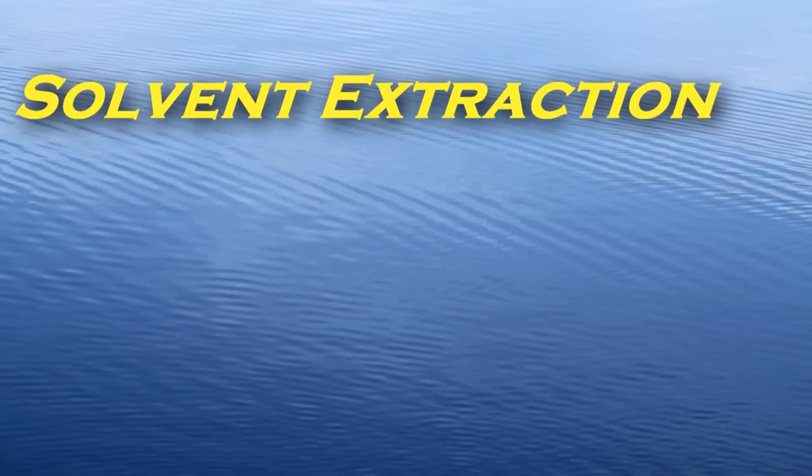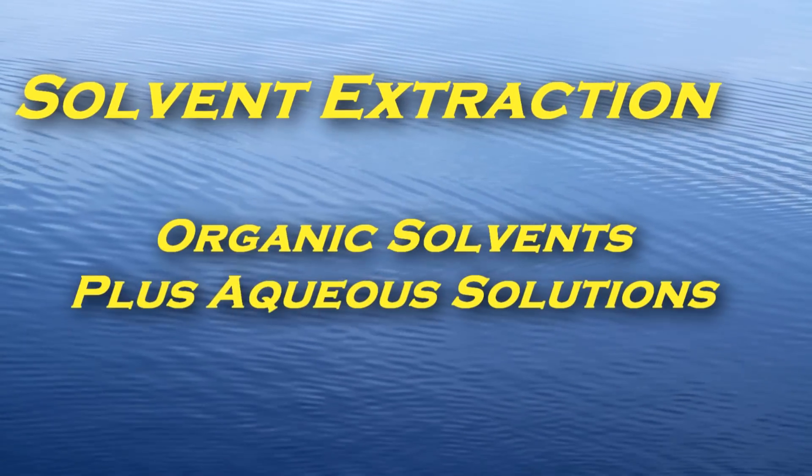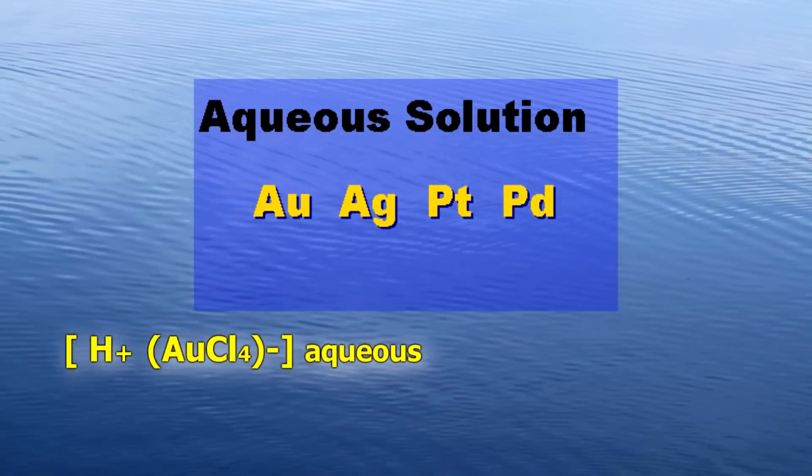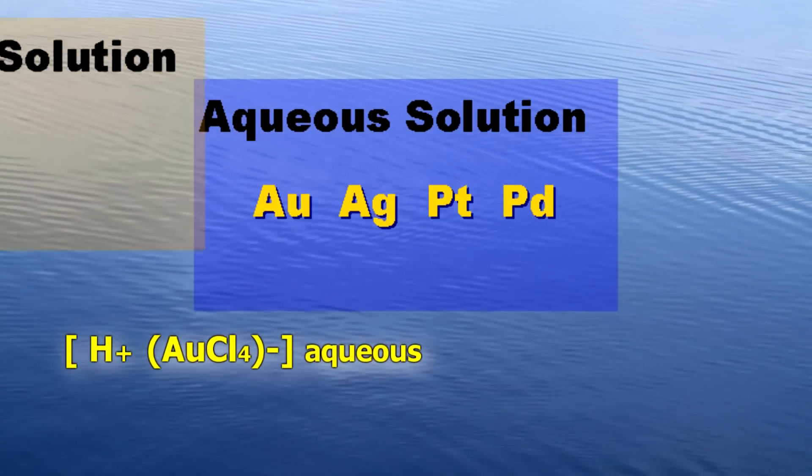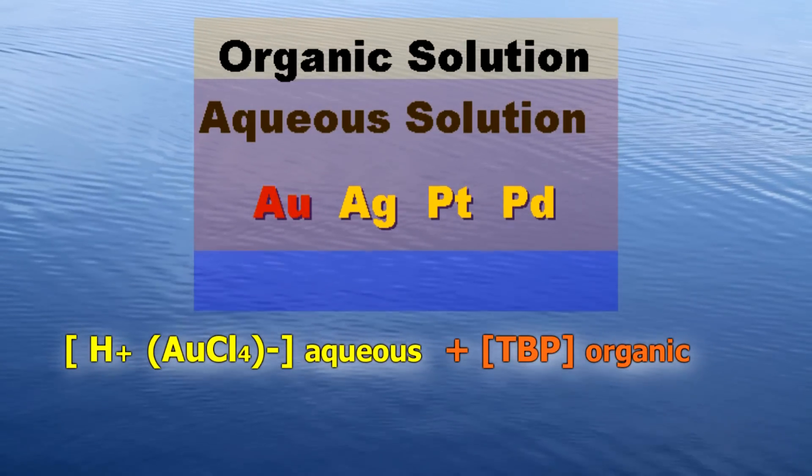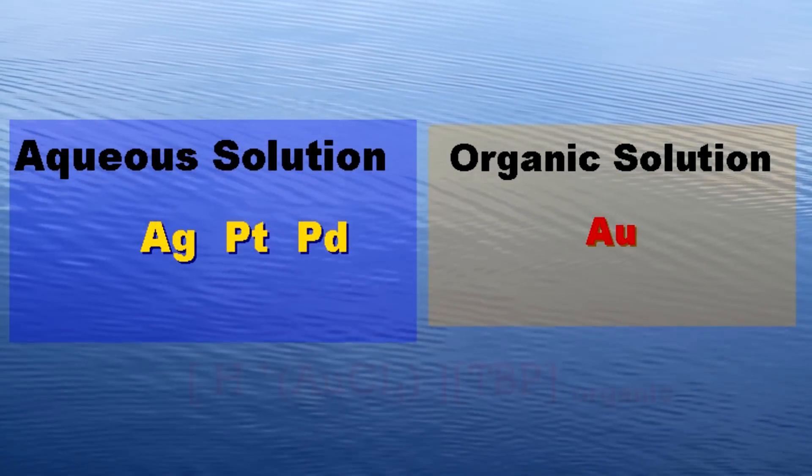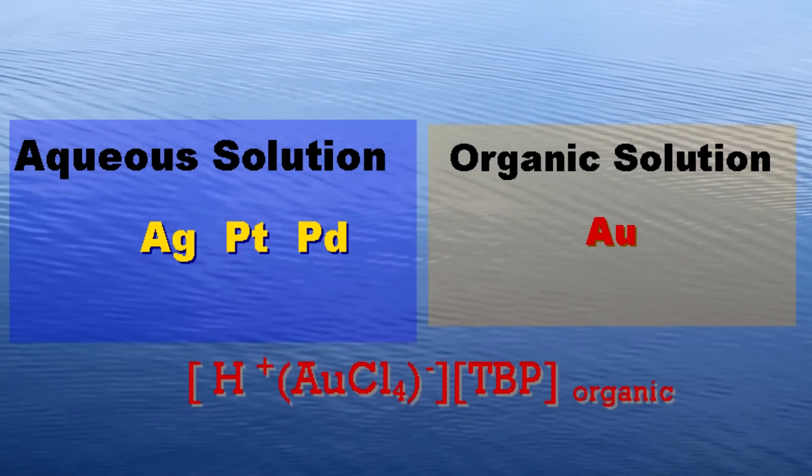Solvent extraction uses organic solvents which are mixed with the aqueous leach solution. Chemicals called extractants and modifiers are used to make precious metal compounds soluble in organic solvents. The difference in relative solubility of compounds in solution will lead to selective separation of the precious metals.